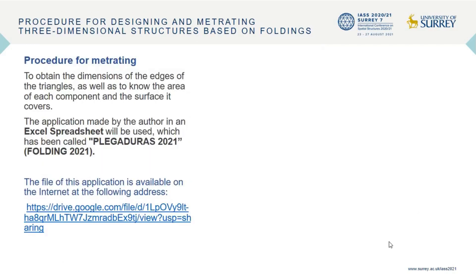The graphing of the complete fold in horizontal plan, frontal and lateral elevations must be concluded. Procedure for metrating: to obtain the dimensions of the edges of the triangles, as well as to know the area of each component and the surface it covers, the application made by the author in an Excel spreadsheet will be used, which has been called Plegadoras 2021, or Folding 2021.